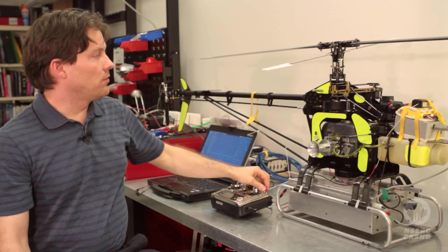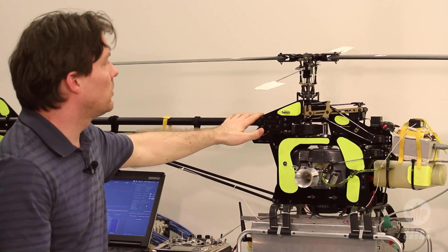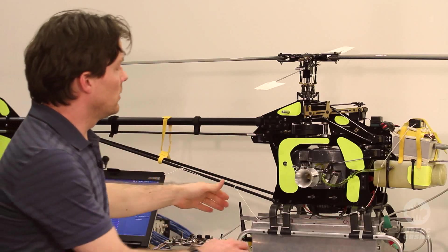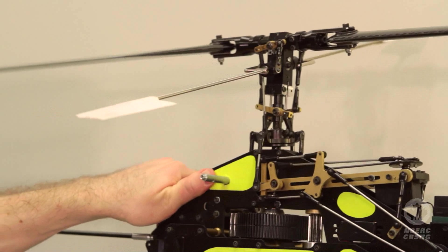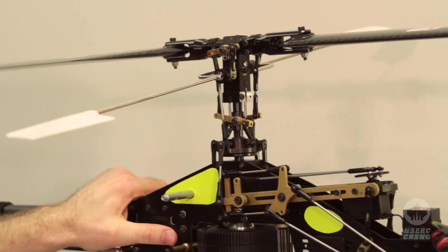And so if I flick a switch here then it'll turn it into computer control mode. And now you can see that when I orient the helicopter the swash plate reacts on its own without the pilot having to do anything.